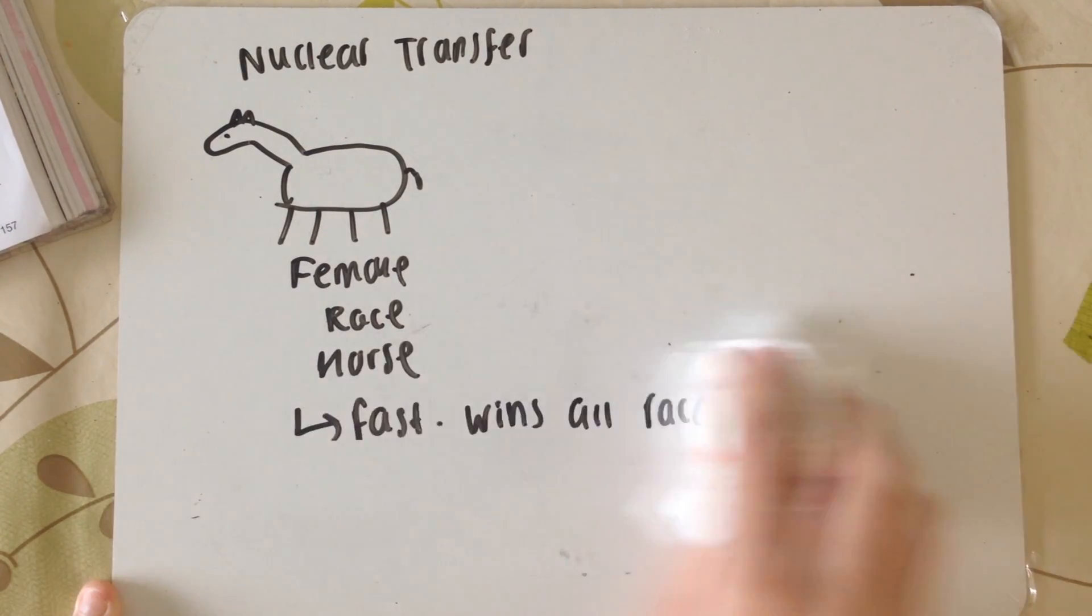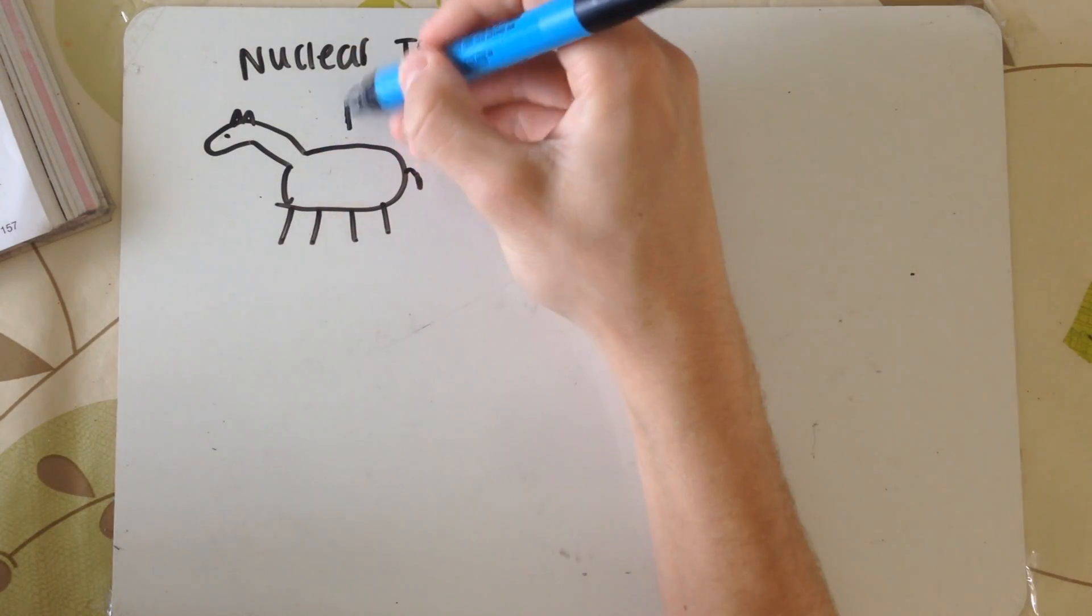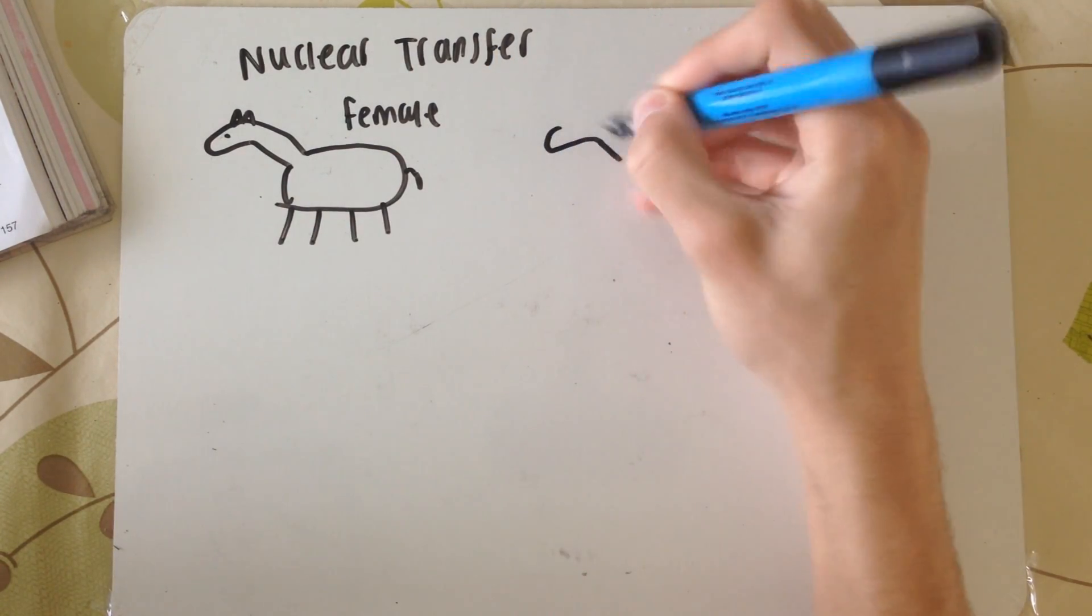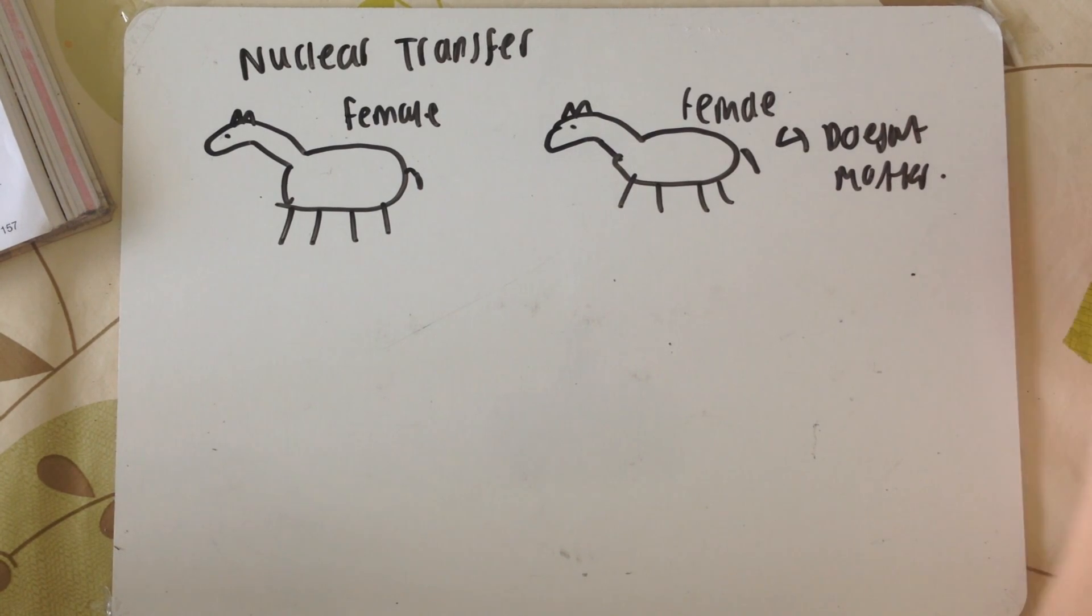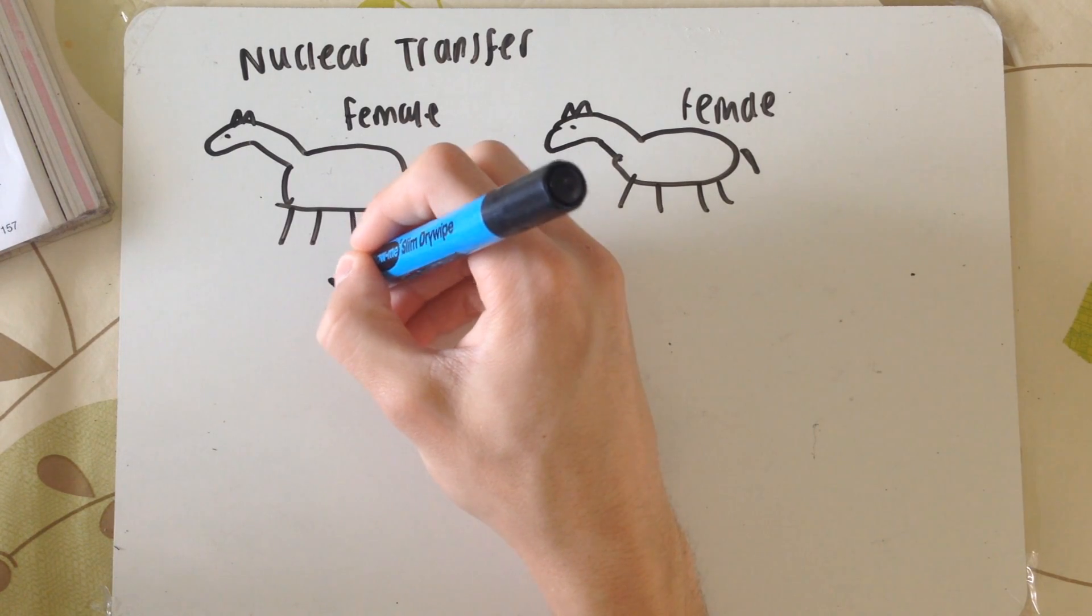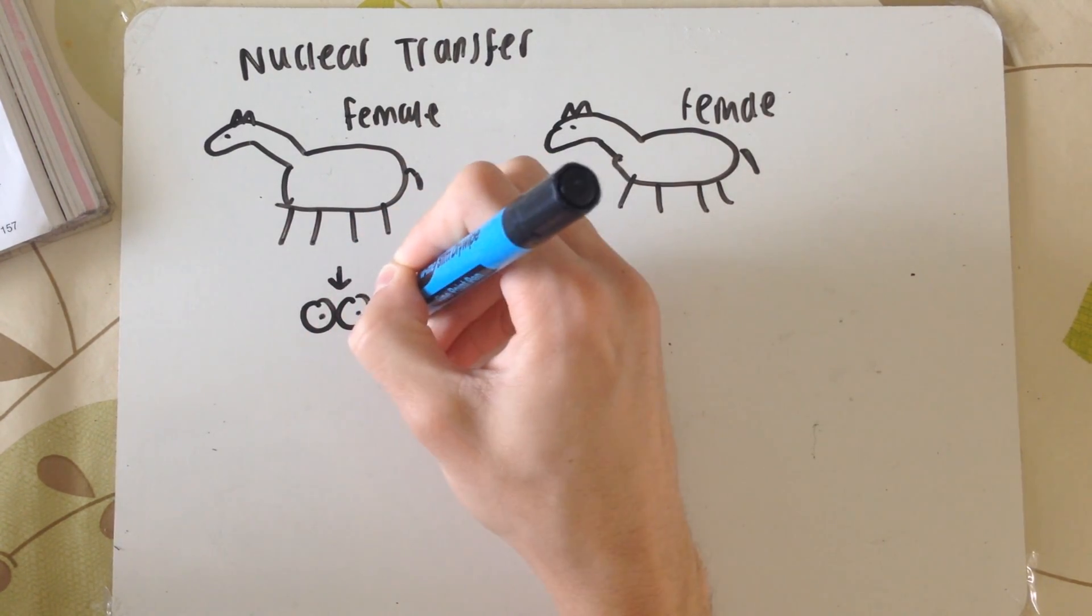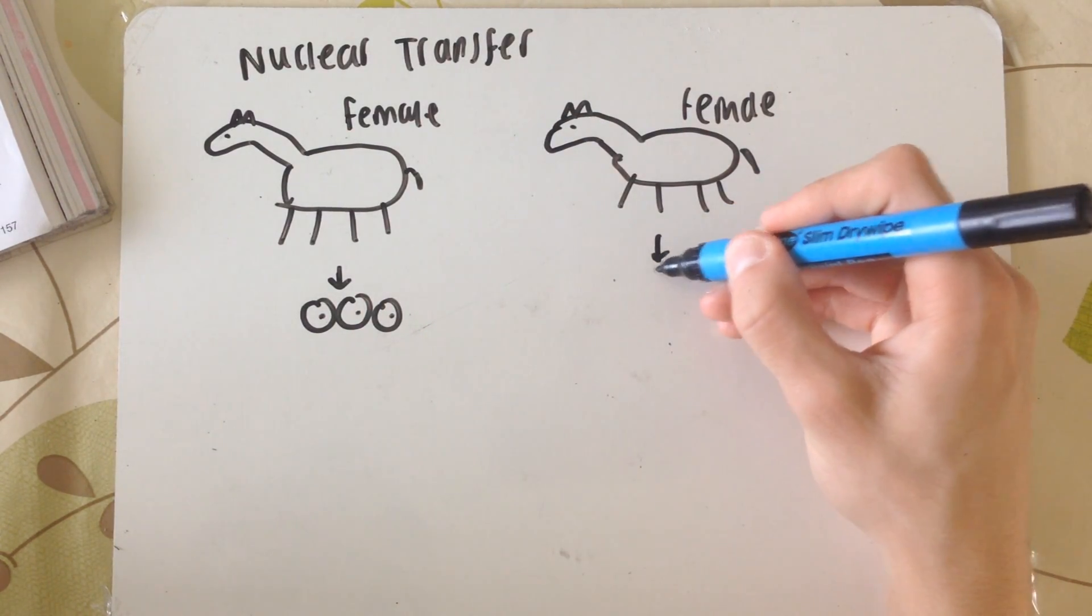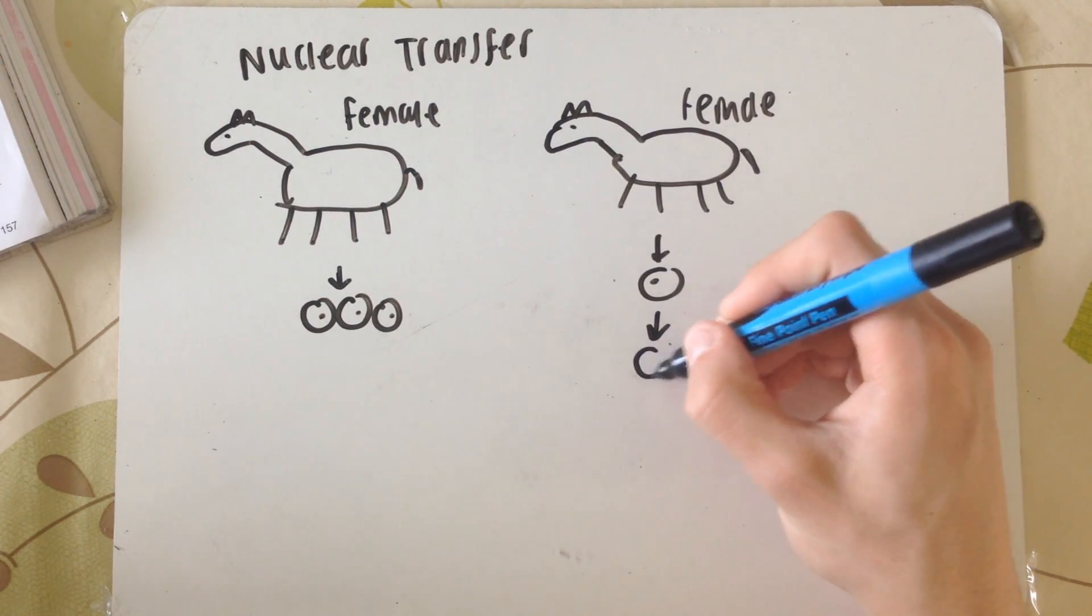The female horse on the left is the horse we want to clone, the one that wins all the races. The female on the right is just an extra horse we've got. Mammary cells, or any sort of cells except gametes, like skin cells, tissue cells, or muscle cells, can be taken from the female we want to clone. This is because every cell in the body has genetically identical DNA, apart from the gametes.